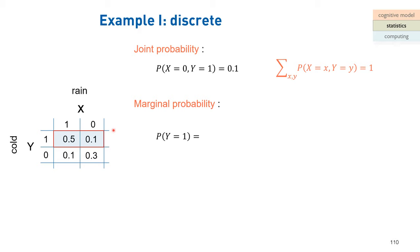This 0.6 is the marginal probability. The literal meaning is that I only care about one event — whether it's cold — regardless of the second event (rain or no rain). Similarly, focusing on one column, summing 0.1 and 0.3 gives 0.4 — the marginal probability of raining, irrespective of whether it is cold or not cold.